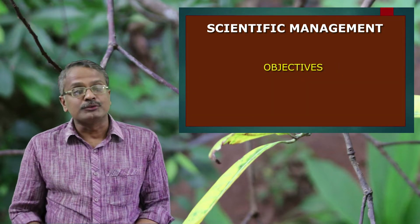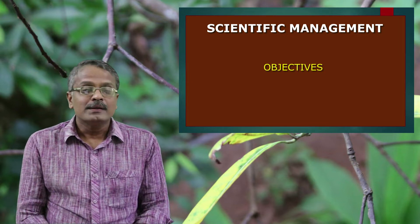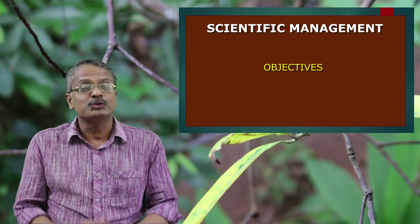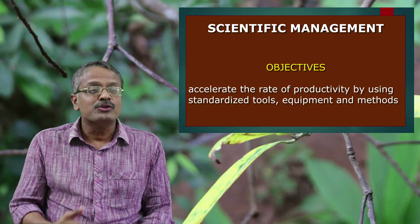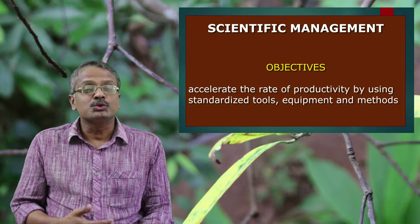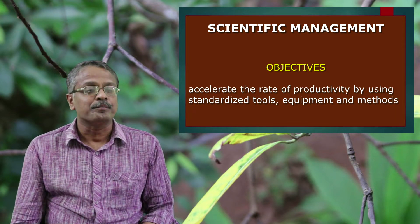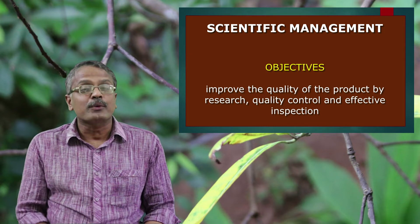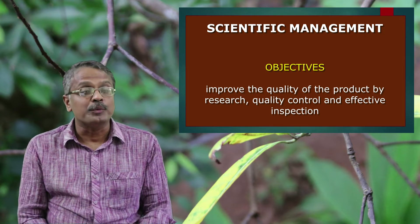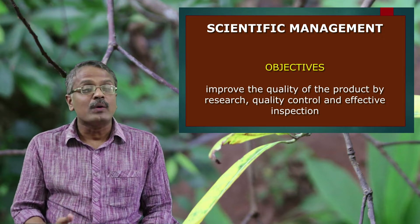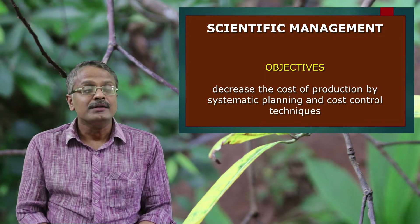Now we can see the objectives of scientific management. The first and most important objective is to accelerate the rate of productivity by using standardized tools, equipment, and methods. The next aim is to improve the quality of the product by research, quality control, and effective inspection. Another objective is to decrease the cost of production by systematic planning and cost control techniques — aiming at maximum production at minimum cost.